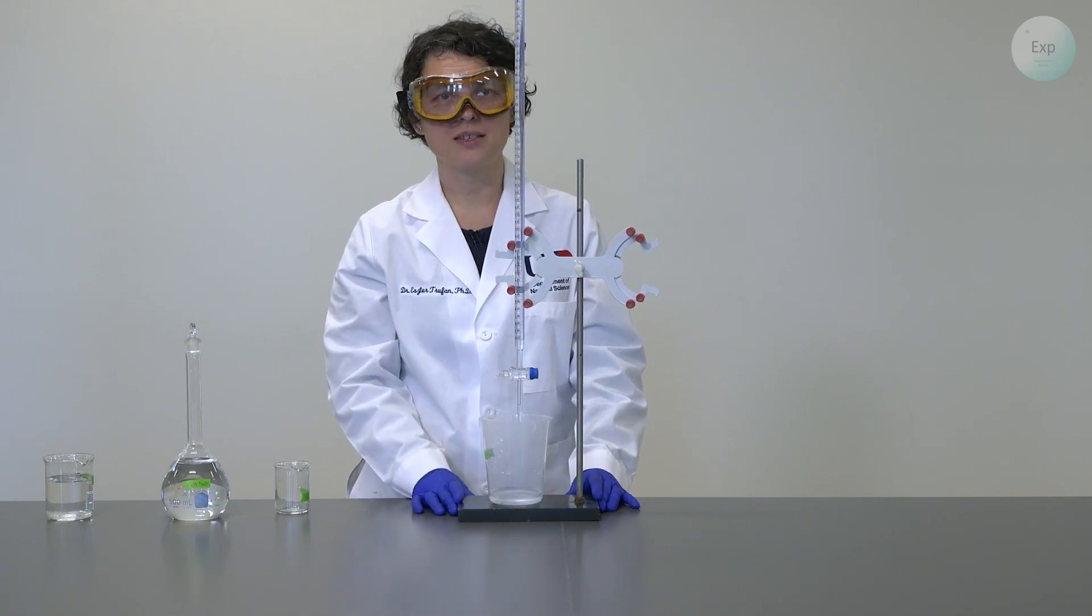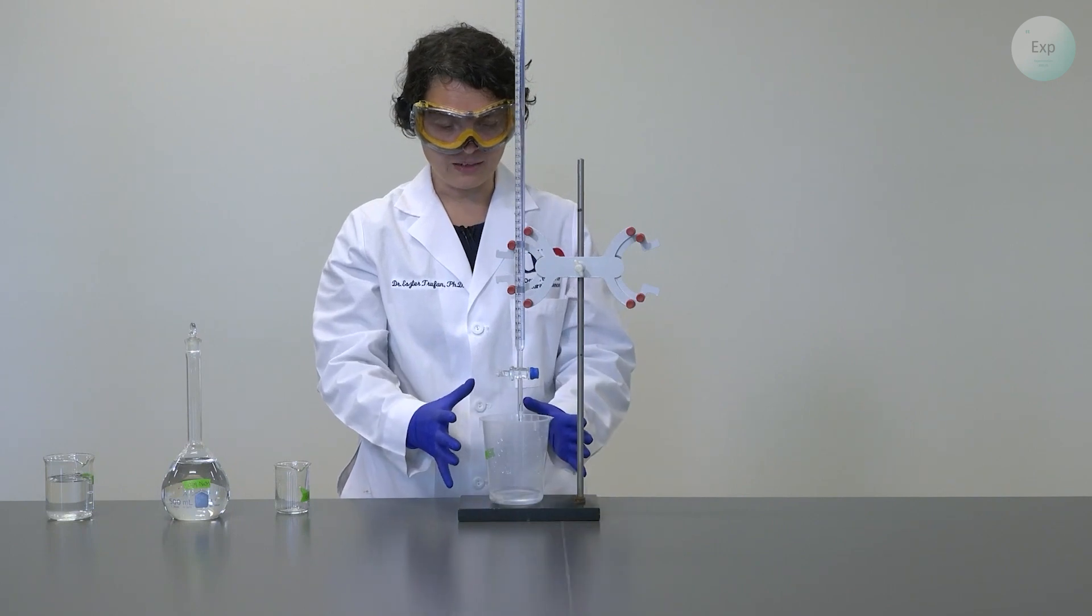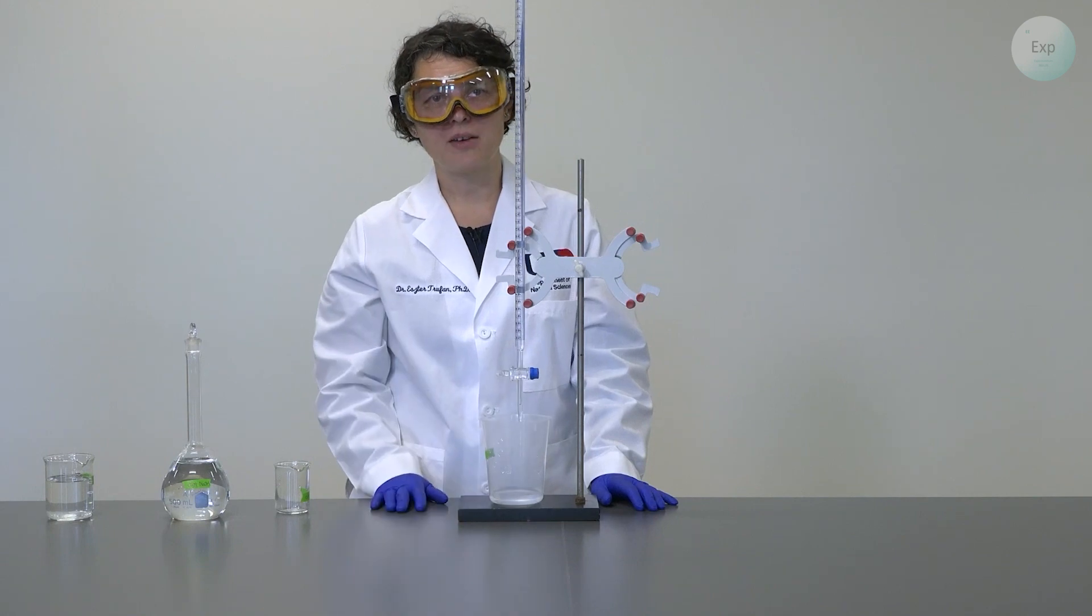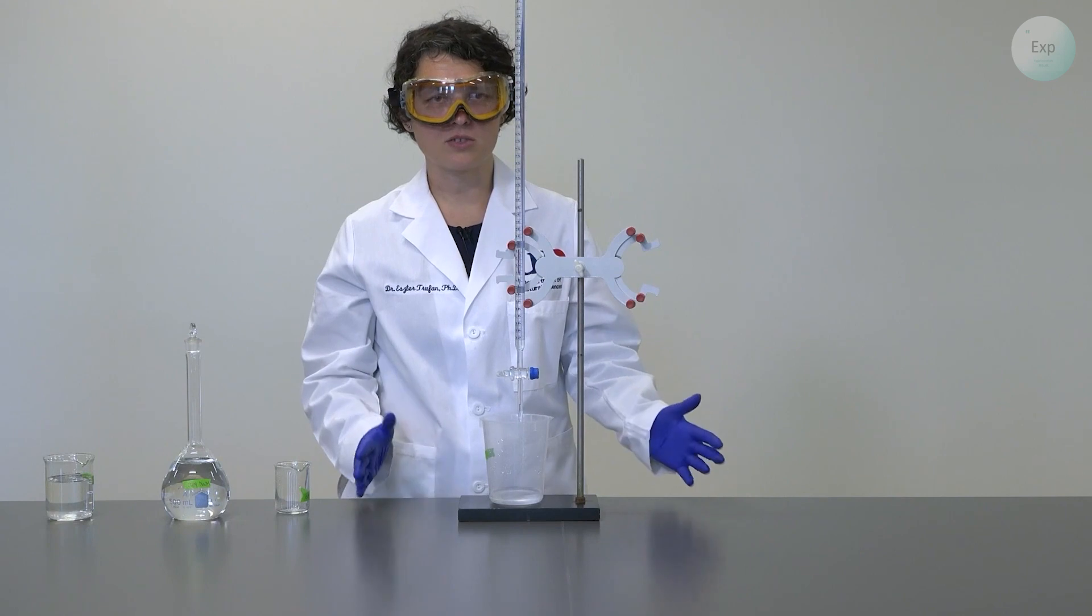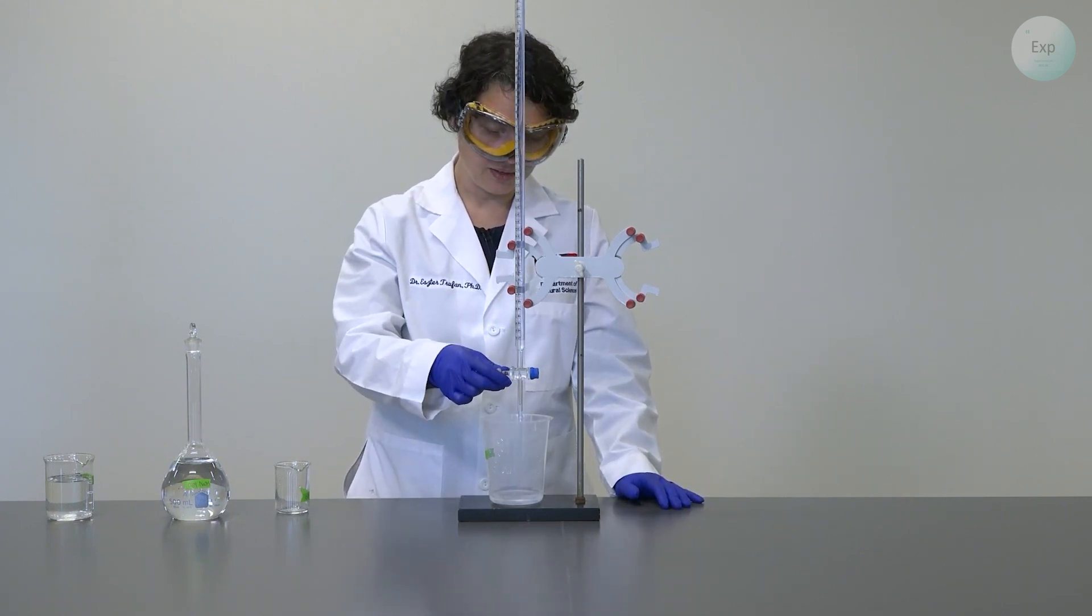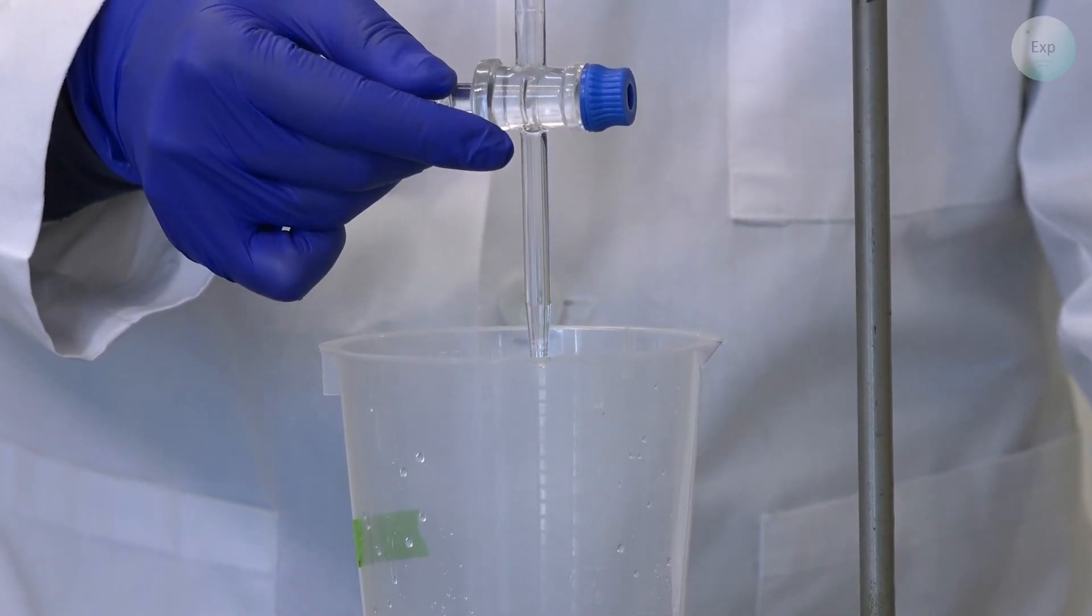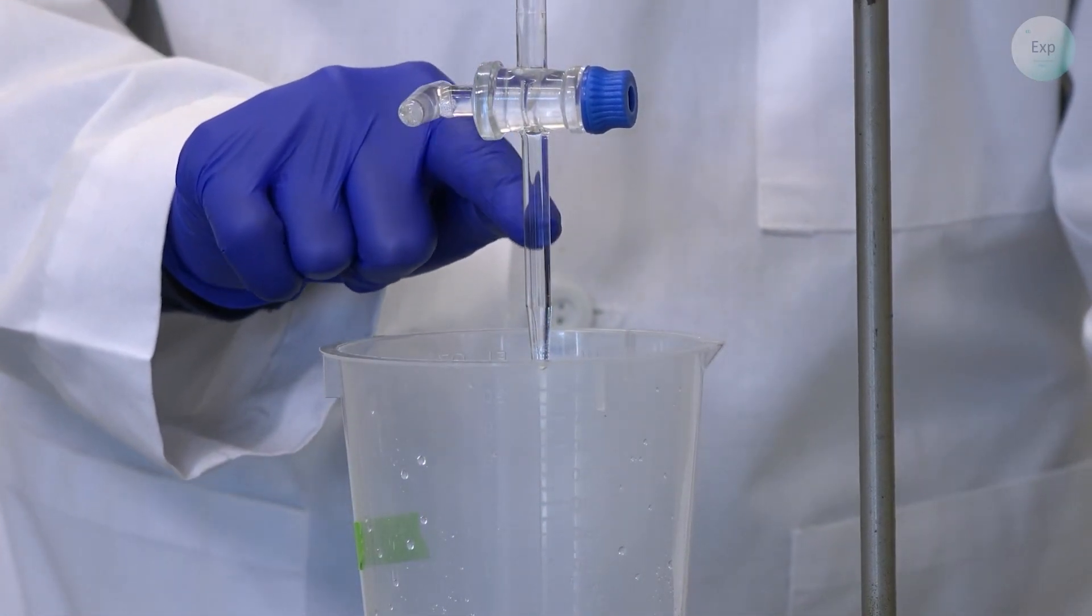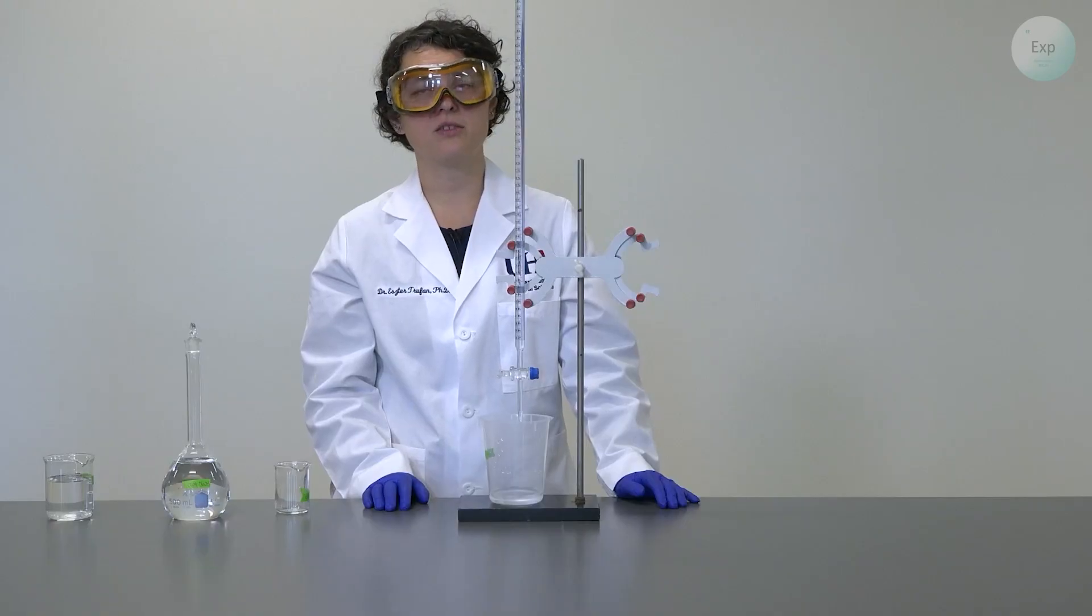because every time we add a known volume of solution into our analyte container, whatever it is in the burette tip will be counted as added volume. And so if there is air, then we count extra volume of titrant that wasn't really there. So to remove that, we simply need to open our stopcock in the open position and release some of our sodium hydroxide solution. And when this tip is completely filled with the sodium hydroxide solution, we close the stopcock and we consider our burette charged.